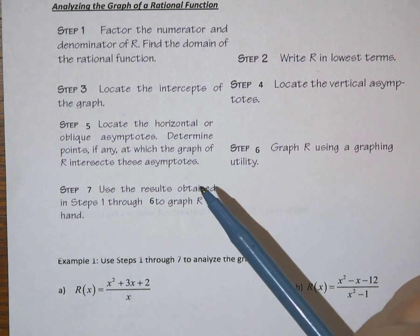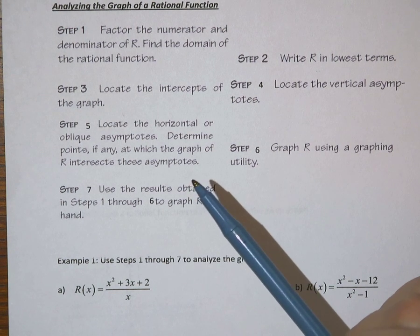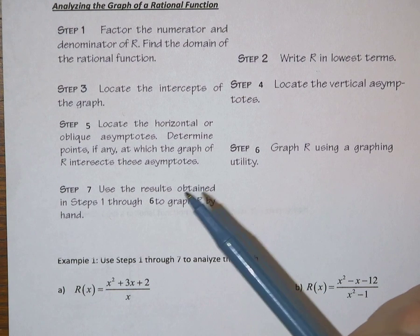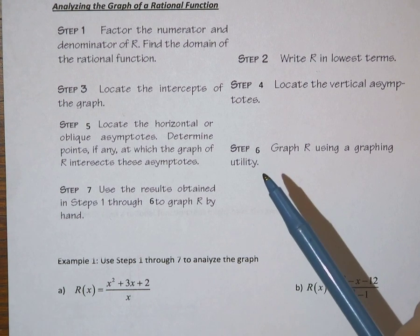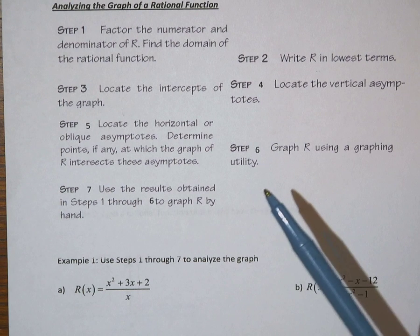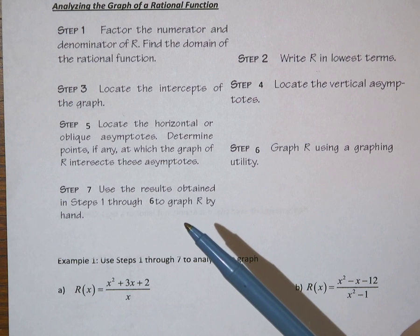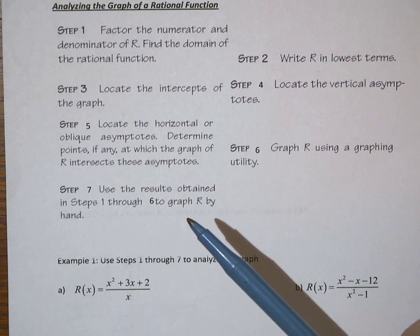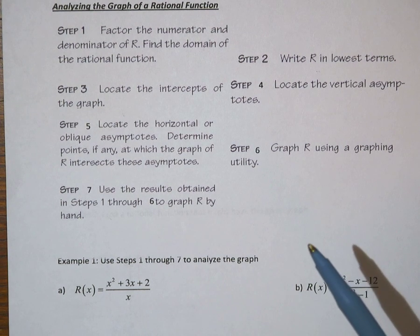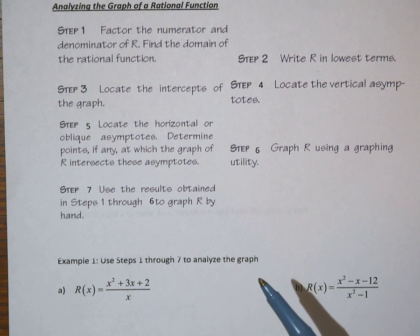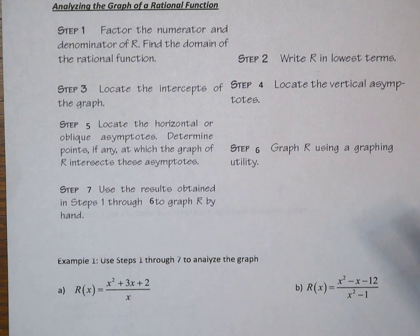We've done this before. Determine points, if any, at which the graph of the rational function intersects these asymptotes. Step 6: graph the rational function using a graphing utility, just plugging it into the calculator and seeing what happens. Step 7: use the results obtained in steps 1 through 6 to graph the rational function by hand, using all that information without the graphing calculator. So 7 steps to apply to analyzing the graph of a rational function.